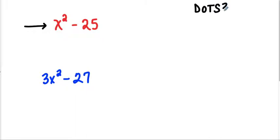Is it the difference of two squares? Well, x squared is a perfect square, 25 is a perfect square, and there's a difference between them. So then I can use the factor pattern, which would give me x plus 5, x minus 5.